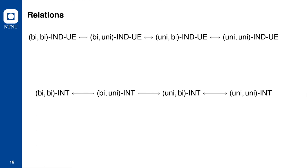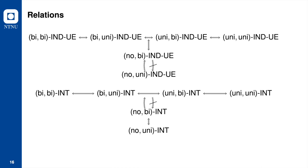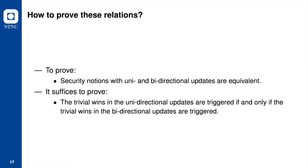Now we present relations among the six variants of the same security notions for UE schemes. We prove that confidentiality or integrity notions with uni and bidirectional updates are equivalent. Recall that the games for six variants of the same security notions are the same; the only difference is how the challenger evaluates the trivial win conditions.